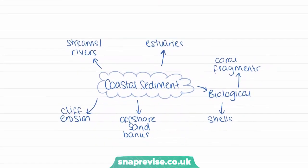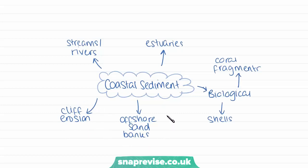Coastal sediment typically comes from five different places. Firstly, from streams and rivers — in estuaries, rivers and streams deposit material they've picked up on their route from inland towards the coast. We also have cliff erosion, as seen in high energy coasts, which produces sediments. There are also offshore sandbanks, where sand deposited off the coast can be brought in by waves. Additionally, sediment comes from biological origins, such as shells from coastal and marine creatures, and coral fragments from dead coral that becomes part of coastal sediments.